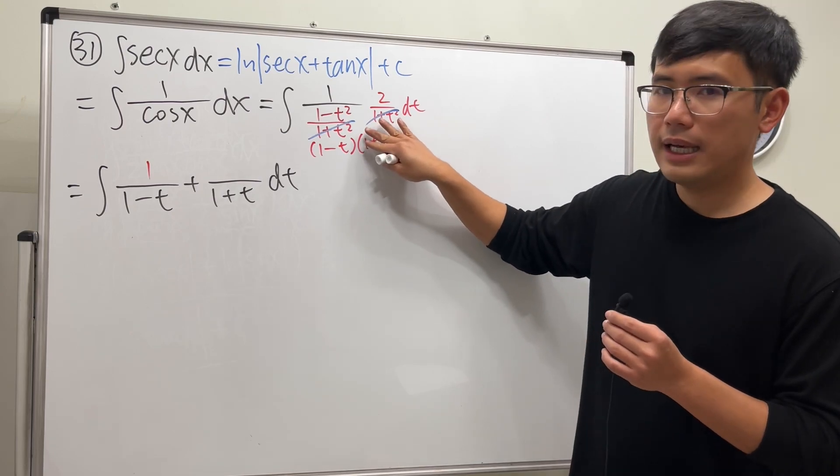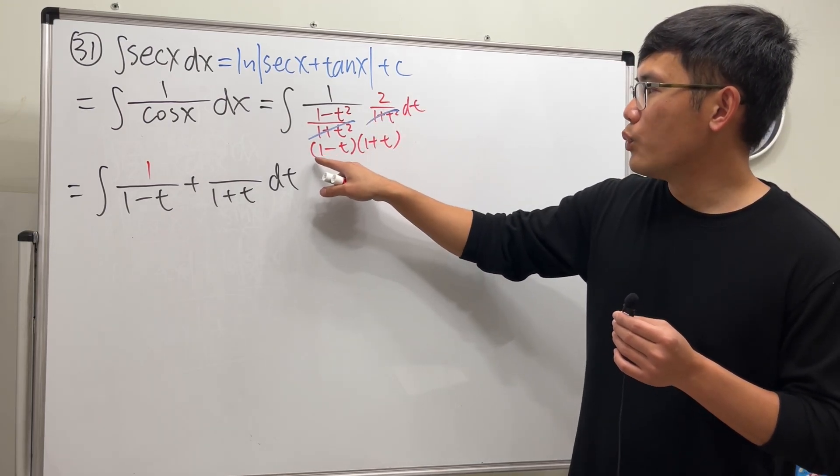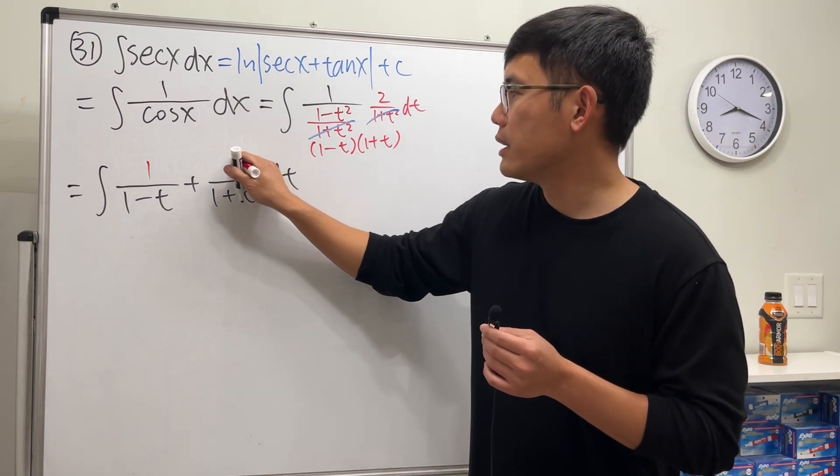Cover this, t has to be negative 1. Put here, 2 over 1 minus negative 1 is again 1.